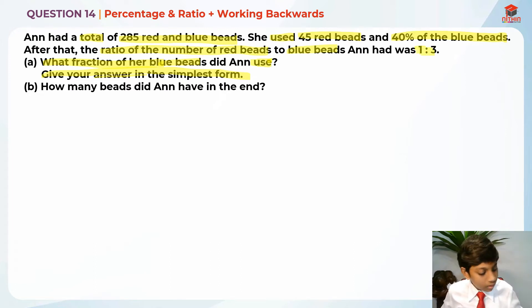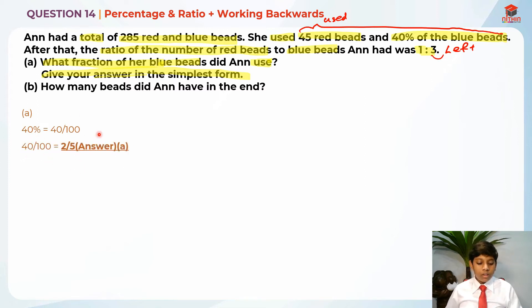This is the left after using, and this is used. So for part A, I just need to find 40% which is 40 over 100. After that, we need to simplify. It will give me 40 over 100 which is 2 over 5. So 2 over 5 is the answer for part A.